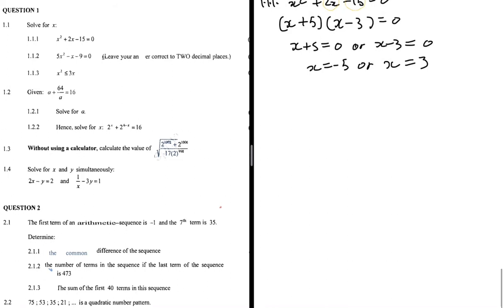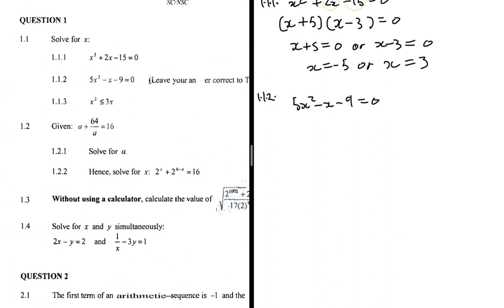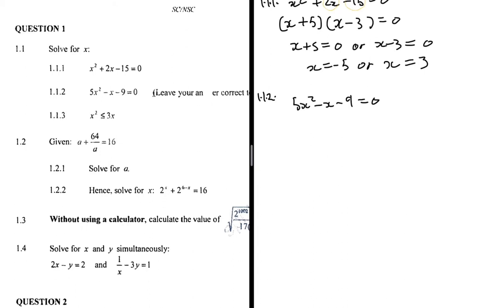Now for 1.1.2: 5x² - x - 9 = 0, leave your answer correct to two decimal places. As soon as I see an equation where the coefficient of x² is not 1, I know I'm going to use the quadratic formula — whether the question asks for two decimal places or not, I'll just use it to avoid problems.